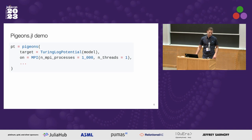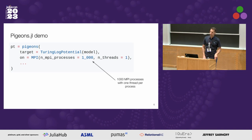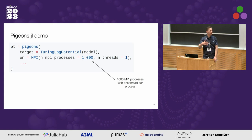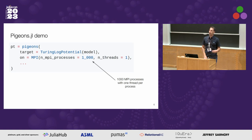It is easy to use Pigeons with MPI communicating machines — you can add an extra argument specifying `on = MPI`, the number of MPI communicating machines, and the number of threads per machine. The output is identical no matter how many machines and threads per machine you use.